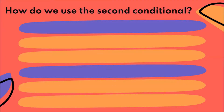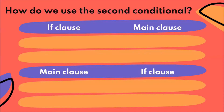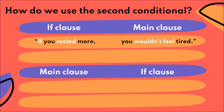How do we use the second conditional? As you can see, there are two parts to every sentence — what we call the if clause and the main clause. The if clause is the condition and starts with 'if.' For example: if you rested more, you wouldn't feel tired. La if clause es la condición — si yo descansara más, o si yo no tuviera exámenes.